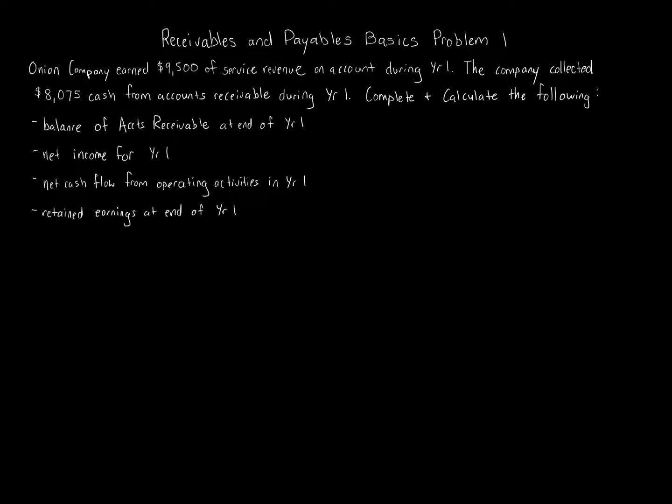Receivables and Payables Basics, Problem 1. Onion Company earned $9,500 of service revenue on account during year 1. The company collected $8,075 cash from accounts receivable during year 1. We need to complete and calculate: the balance of accounts receivable at the end of year 1, net income for year 1, net cash flow from operating activities in year 1, and retained earnings at the end of year 1.